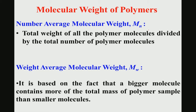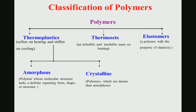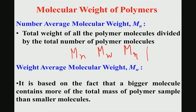As far as molecular weight is concerned, there are three types: number average molecular weight (Mn), weight average molecular weight (Mw), and viscosity average molecular weight (Mη). The number average molecular weight is the weight of all molecules divided by the total number of polymer molecules. The weight average molecular weight accounts for the fact that larger molecules contribute more to the total mass of the polymer sample than smaller molecules.